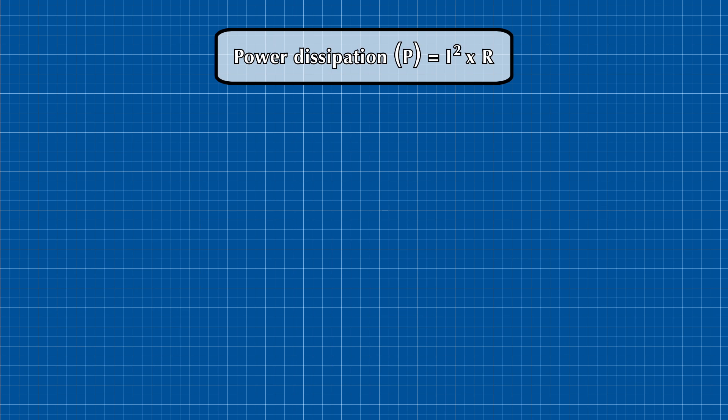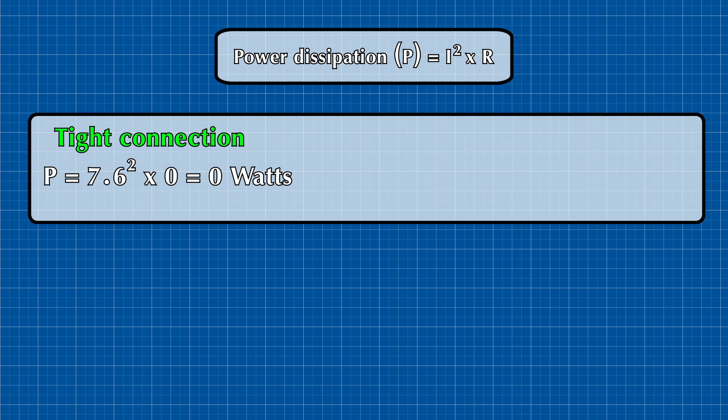Power dissipation equals current squared times resistance. So for a tight connection, it is 7.6 amps squared times 0 ohms and this will equal to 0 watts, and there will be no heat since power dissipated there is 0.